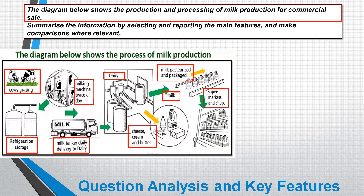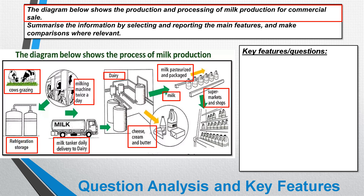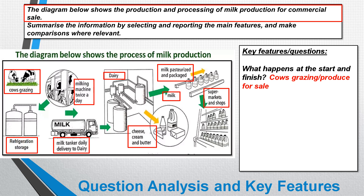Once we've clearly identified the different steps, the next thing to do is ask ourselves five key questions to identify the key features of any process diagram. First: what happens at the start and finish? At the start we've got cows grazing, and at the end we've got milk on a supermarket shelf. Second: is it a natural or man-made process? This is clearly a man-made process — not natural. We've got factories and lots of human involvement.